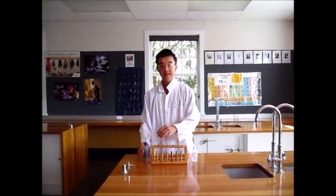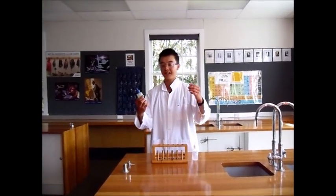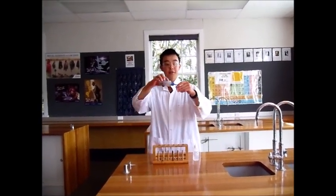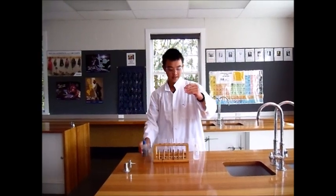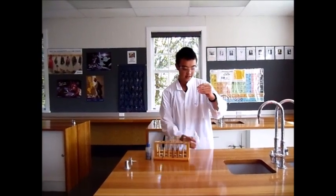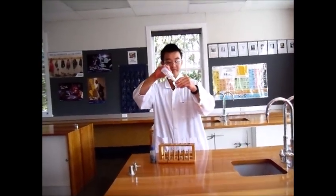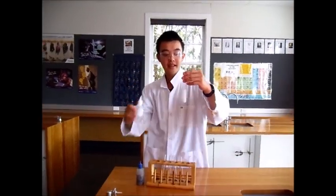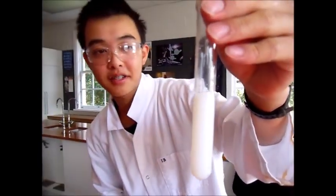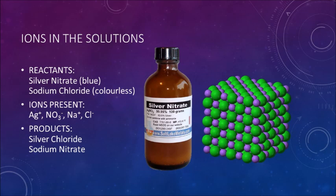Hello, this is a precipitation reaction between silver nitrate and sodium chloride. As you can see, a cloudy white precipitate forms. Silver nitrate is a blue solution, while sodium chloride is a colorless solution.